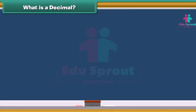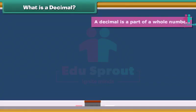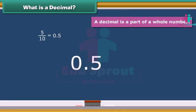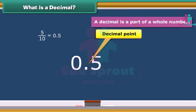Basically, a decimal is a part of a whole number. Look, the fraction 5 by 10 could be written as 0.5. You can easily identify a decimal by looking at the decimal point.